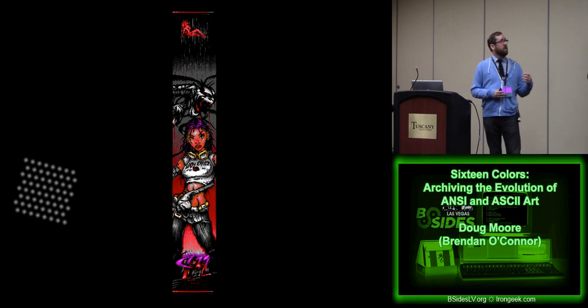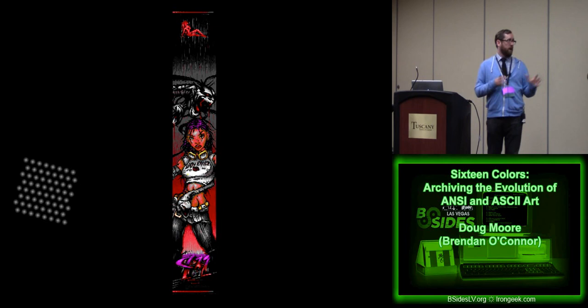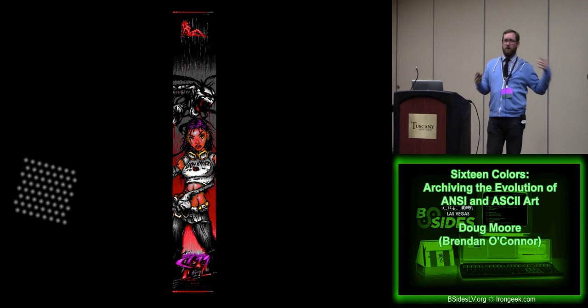Artists up until this time were working 25 lines at a time at the full 80 by 25 screen. But Acid Draw allowed an artist to see in real time what their ANSI looked like blown out, viewed from top to bottom as a high-resolution image. It really pushed the quality of ANSI art. In particular, proportions got better — previously an artist could only compare 25 lines at a time, so if the head was at line one and the legs at line 300, you couldn't really make a good proportional comparison.